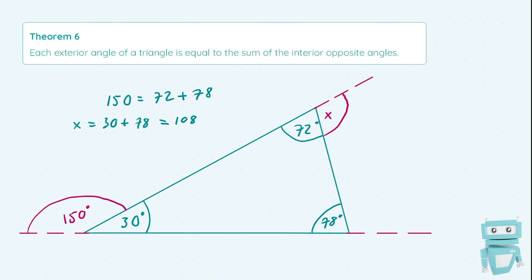And lastly for this angle over here, outside 78 degrees, we can call this y. We know that y = 72 + 30 = 102 degrees.